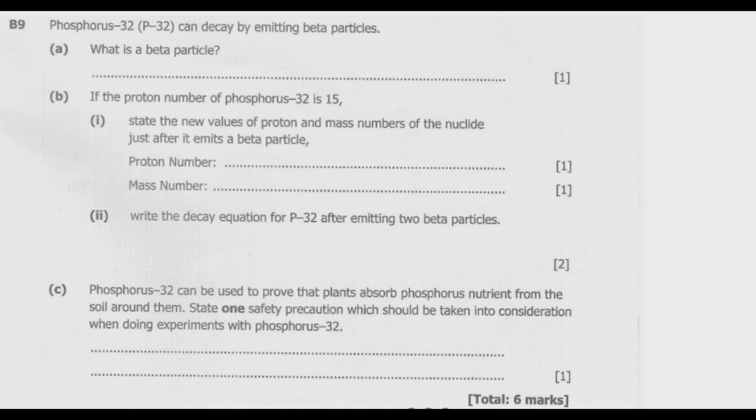Let us look at question B9. Phosphorus-32 can decay by emitting beta particles. What is a beta particle? So a beta particle in simplest term is just an electron.